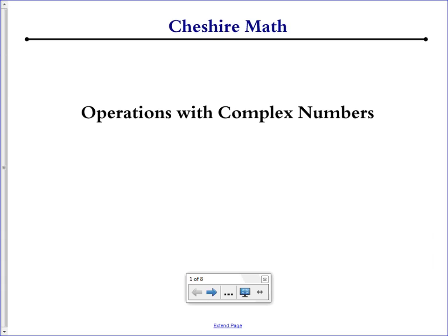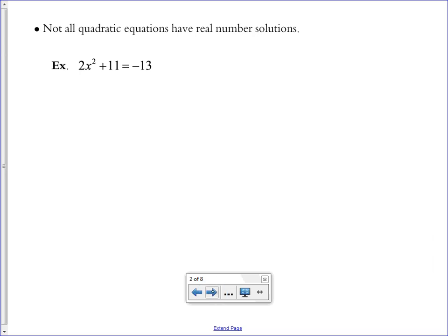This video is about operations with complex numbers. Not all quadratic equations have real number solutions. Here's an example of one: 2x squared plus 11 equals negative 13.